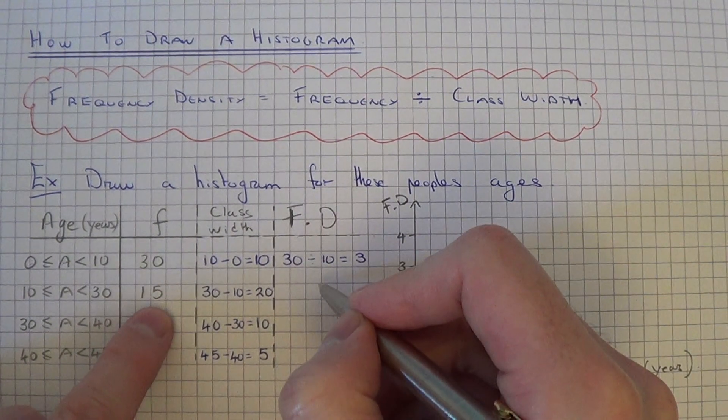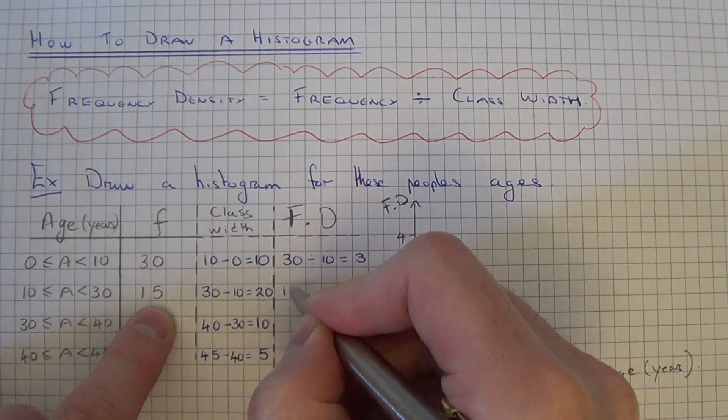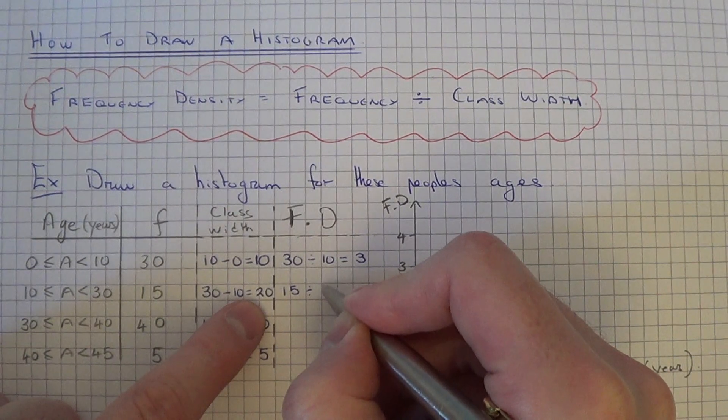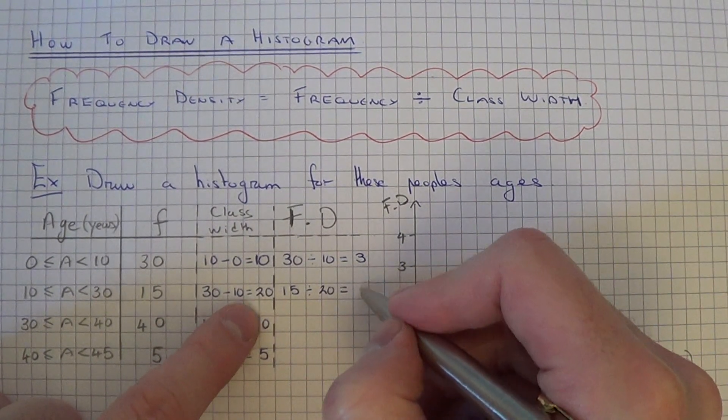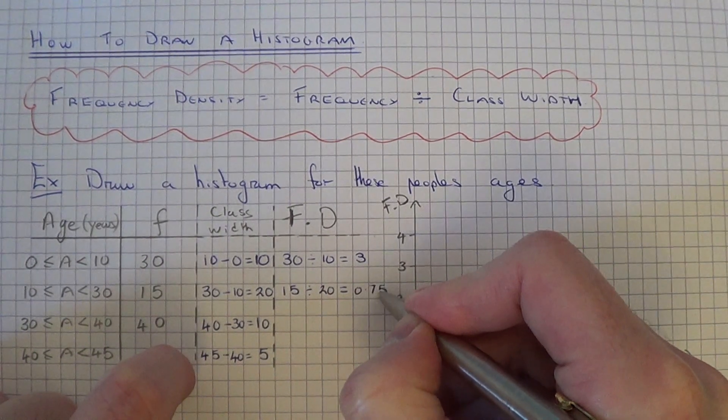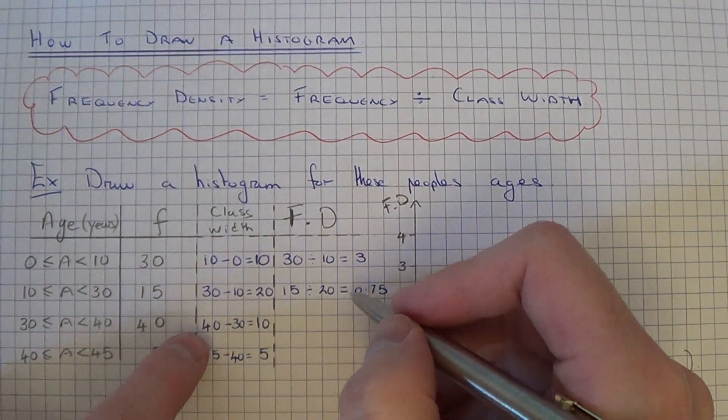For the second group, this will be 15 divided by 20, which is 0.75. If you're finding this difficult, you can always do it on your calculator.